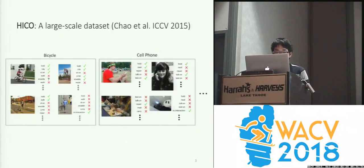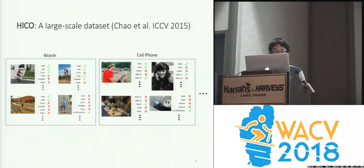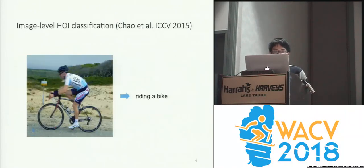A recent work by Chow et al. has studied this problem by introducing a large-scale image dataset called HICO. This dataset not only provides image examples of different object categories, but also different action categories that people can apply to each object. With this dataset, we are able to train classifiers to predict the interaction class label, like riding a bicycle, from an input image.